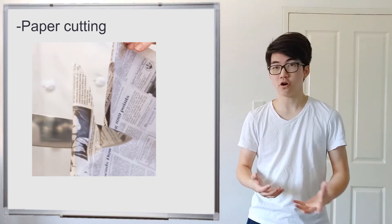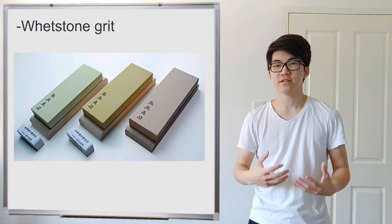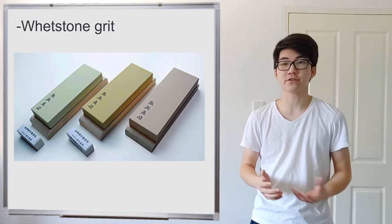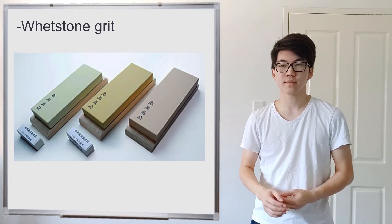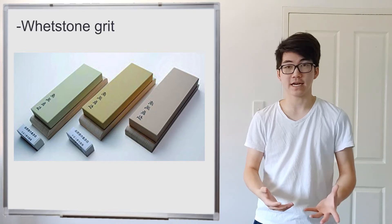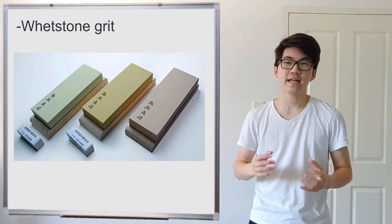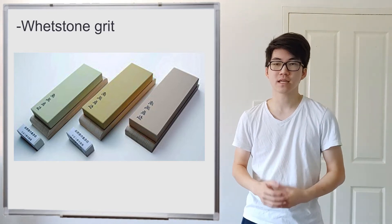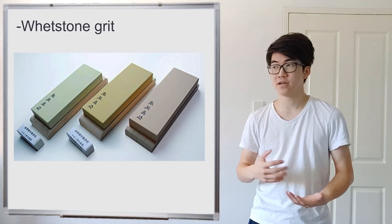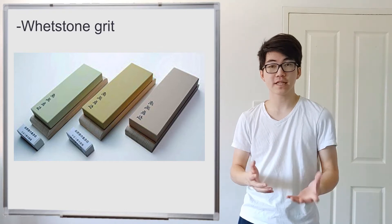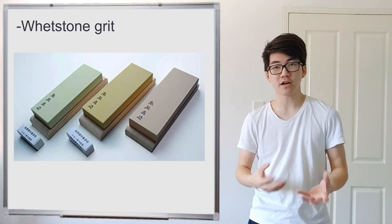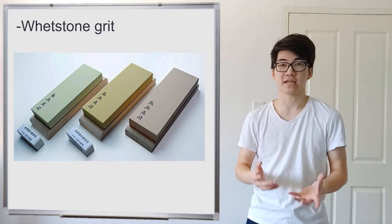Another way that you could do it which is slightly more objective is the whetstone grit or sandpaper grit that you sharpened the knife using. So you could say it was sharpened on a 1000 grit whetstone or a 5000 or a 20,000 grit whetstone. And it gives you an idea of the fineness of the edge. But there's a big problem with that because even if you sharpened it on a 20,000 grit whetstone but you had terrible sharpening technique, it would probably actually still be blunt.